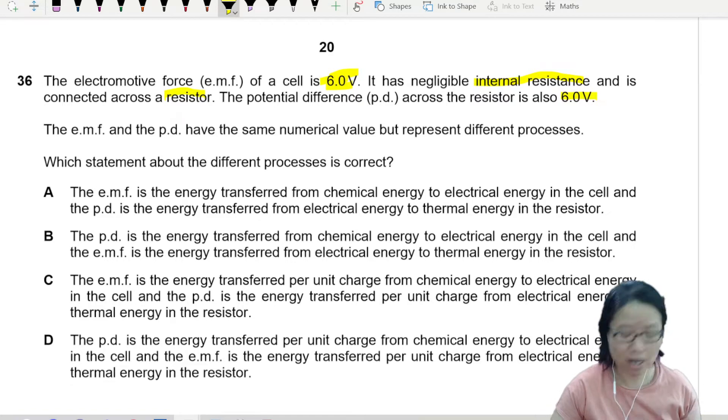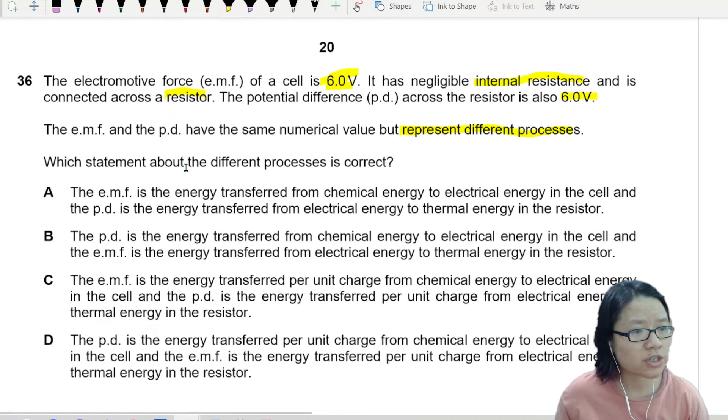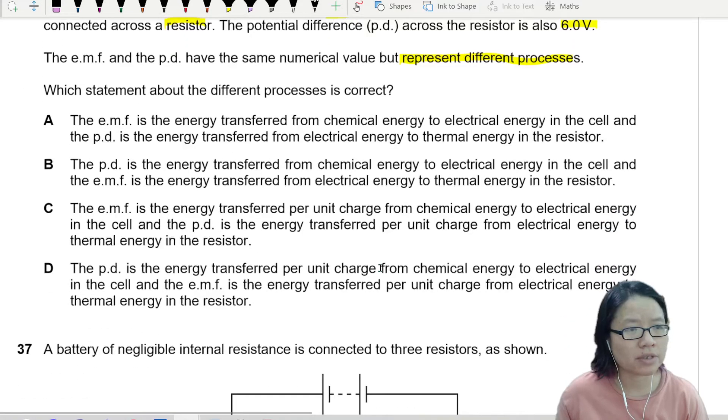So the energy supplied and the energy used is the same. Of course, there's no internal resistance. They have the same numerical value, but represent different processes. Interesting. Which statement about the different process is correct?